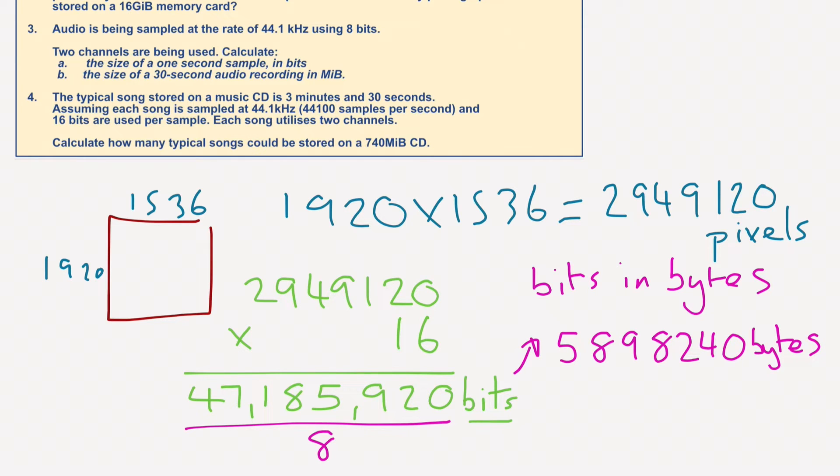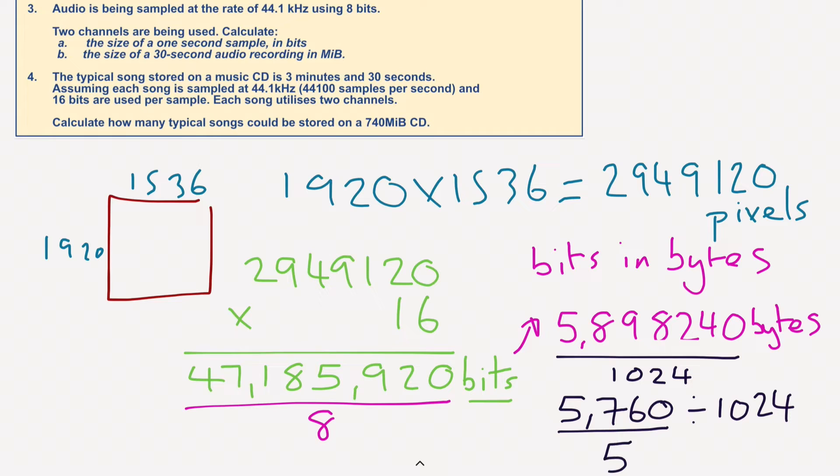But we've got to get it into megabytes. So let's think about our file sizes. We've got bytes, then kilobytes, then megabytes. In order to get into kilobytes, we divide by 1024, which gives us 5,760. Then we divide that again by 1024 to turn it into megabytes. We should get a total of 5.625 megabytes. And that is your answer.